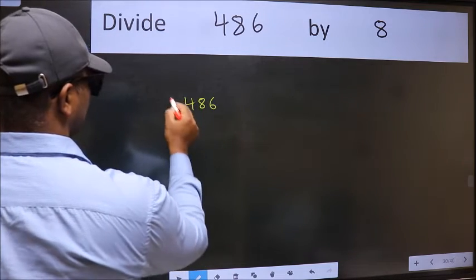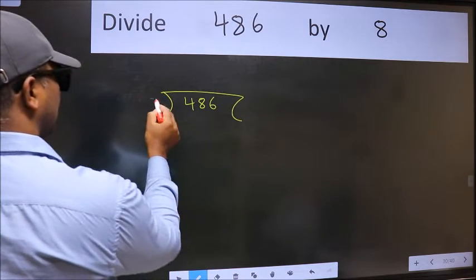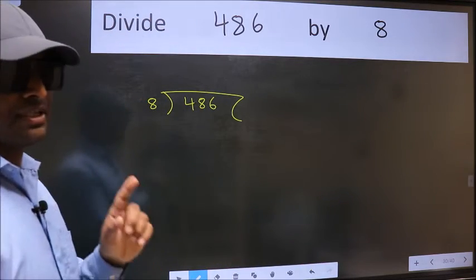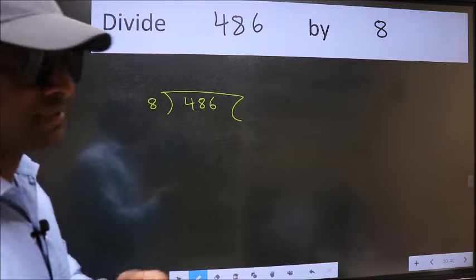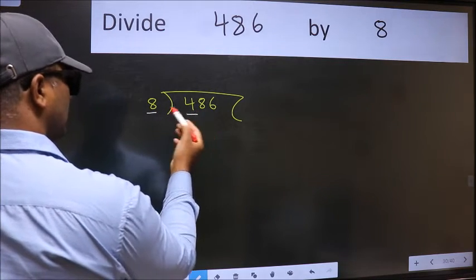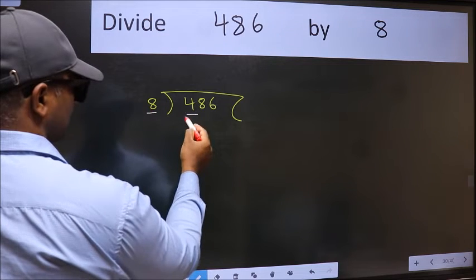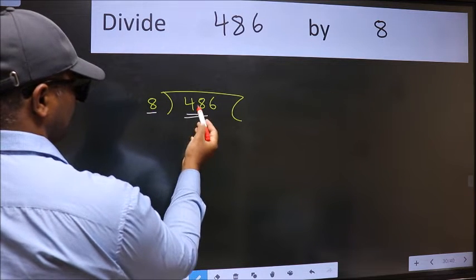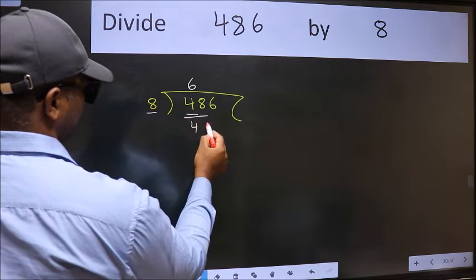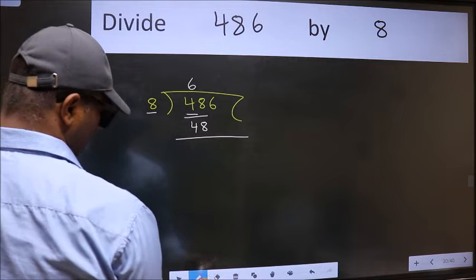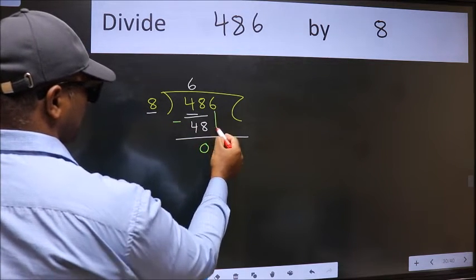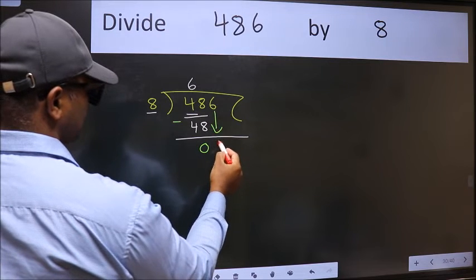486 here, 8 here. This is your step 1. Next, here we have 4 and here 8. 4 is smaller than 8, so take two numbers: 48. When do we get 48 in the 8 table? 8 times 6 is 48. Now we should subtract. We get 0. After this, bring down the beside number. So, 6 down.